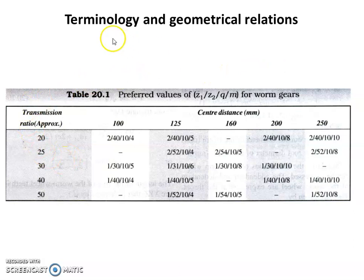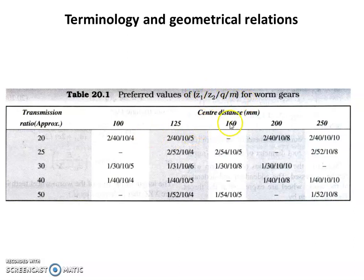Before proceeding, in the last lecture we covered terminology — including the preferred values for number of starts, number of teeth, the diametric equations and module, center distance versus transmission ratio, and the available values.